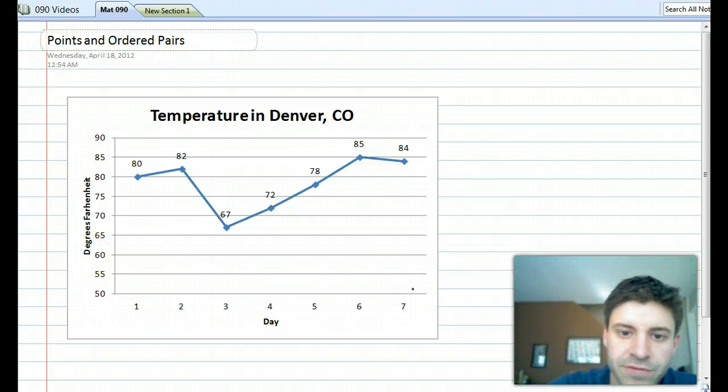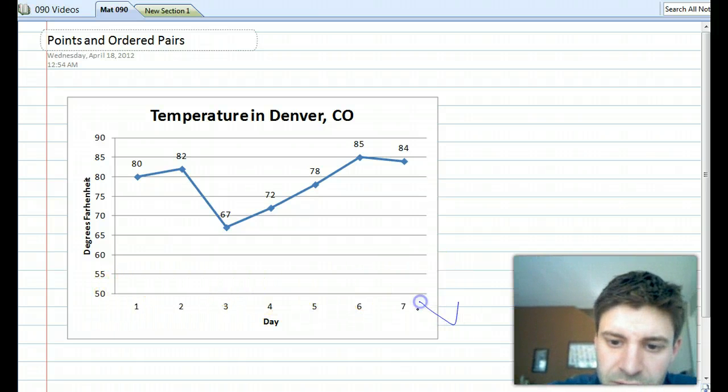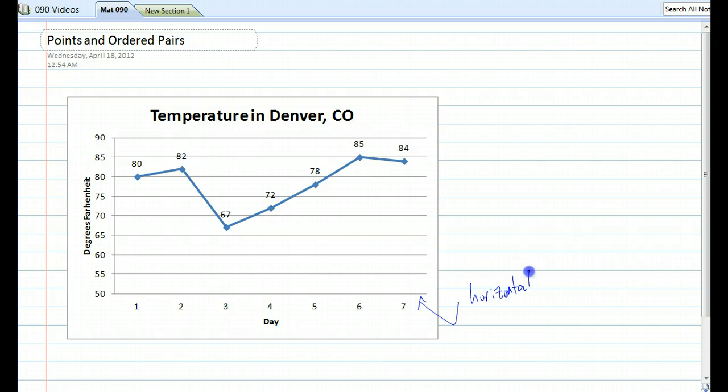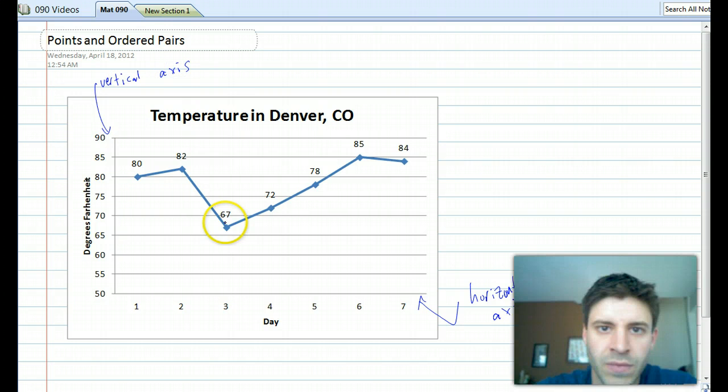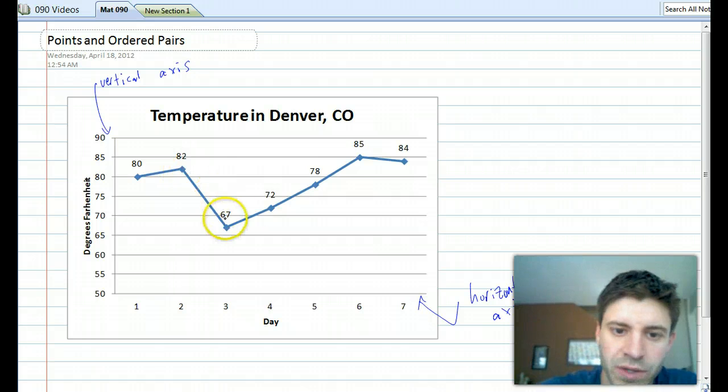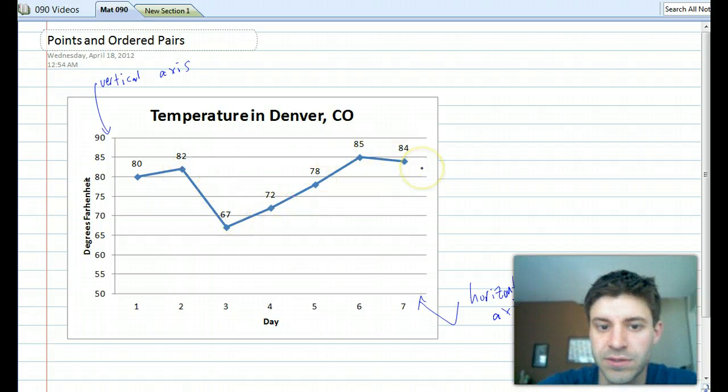This one in particular is called a line graph, and on a line graph you'll have a horizontal axis. This is called the horizontal axis. And you'll have a vertical axis. As for the actual graph, there are a series of points connected by lines in this case.